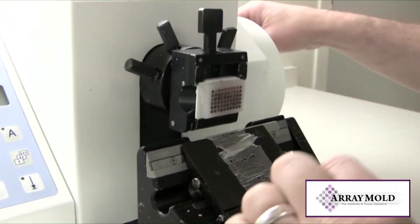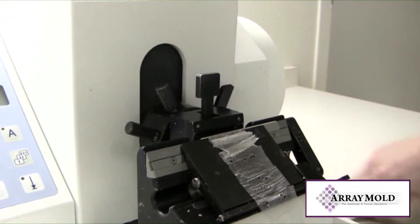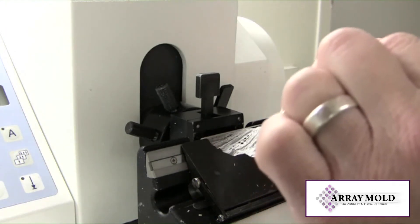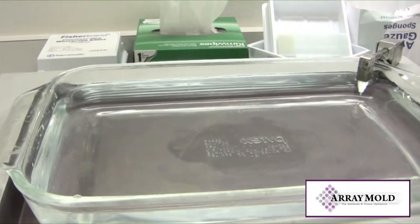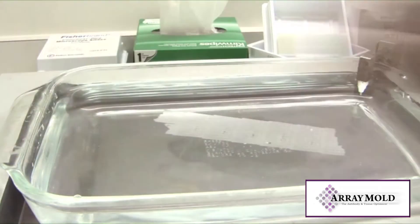You can see in the tissue ribbon that some of the punch cores are missing. Actually, they have curled. This is common when cutting an array block. When you lay the ribbon on a water bath, they usually flatten out.